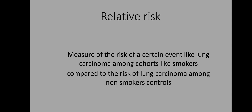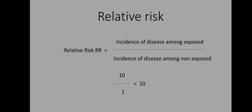How do we define relative risk? It is the measure of the risk of a certain event — such as lung carcinoma in our example — among the cohort who were smokers, compared to the risk of that same event among non-smokers who were the controls. It is calculated by dividing the incidence of disease among the exposed group (smokers) by the incidence among the non-exposed (non-smokers): 10 divided by 1 equals 10. So the relative risk in our example is 10.